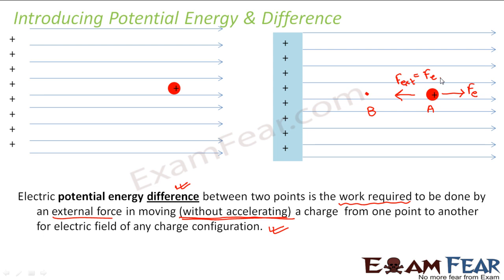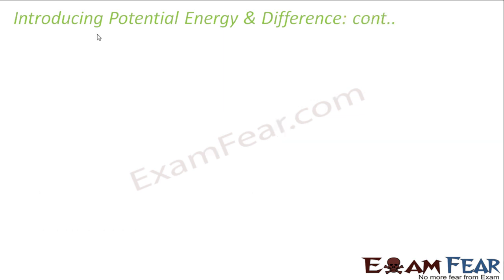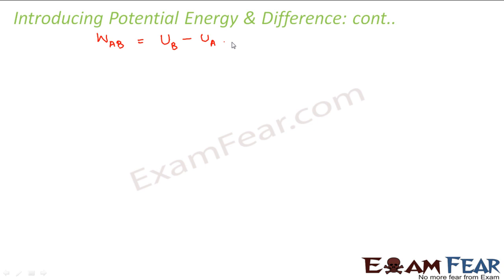Now that I have told you about potential energy difference, let us concentrate on what is potential energy and how we define it. Till now we saw that work done in taking a charged particle from point A to point B is equal to the potential energy difference between B and A — that is potential energy at B minus potential energy at A. So now my goal is to define potential energy itself.